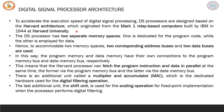Let us discuss the Harvard architecture. In order to improve the speed of execution of digital signal processing, the digital signal processor incorporates the Harvard architecture. This originated from Mark 1 relay-based computers built by IBM in 1944 at Harvard University. This processor has two separate memory spaces — one for the program code and one for the data. Having two separate memory spaces requires two corresponding address buses and two data buses. The program memory and data memory each have their own connections to the respective program memory bus and data memory bus.